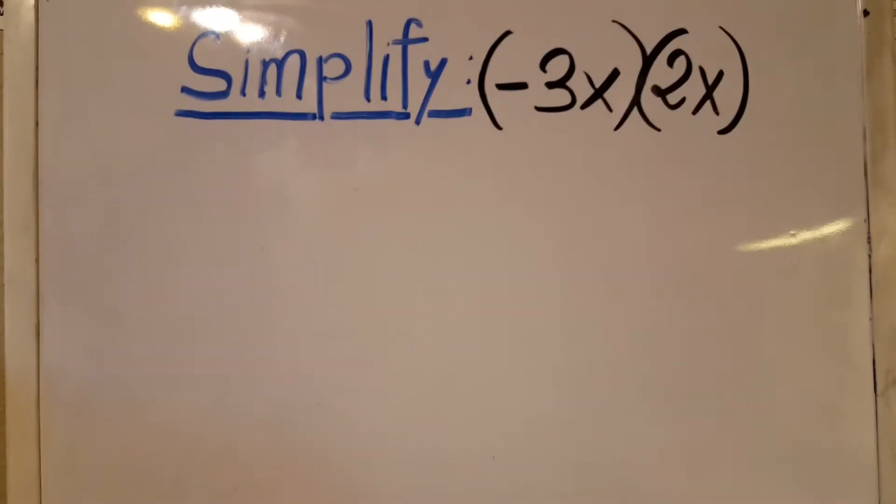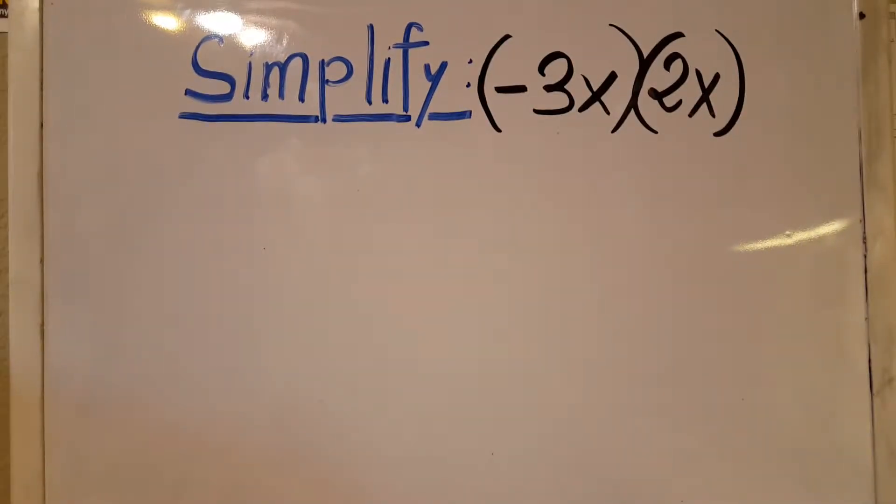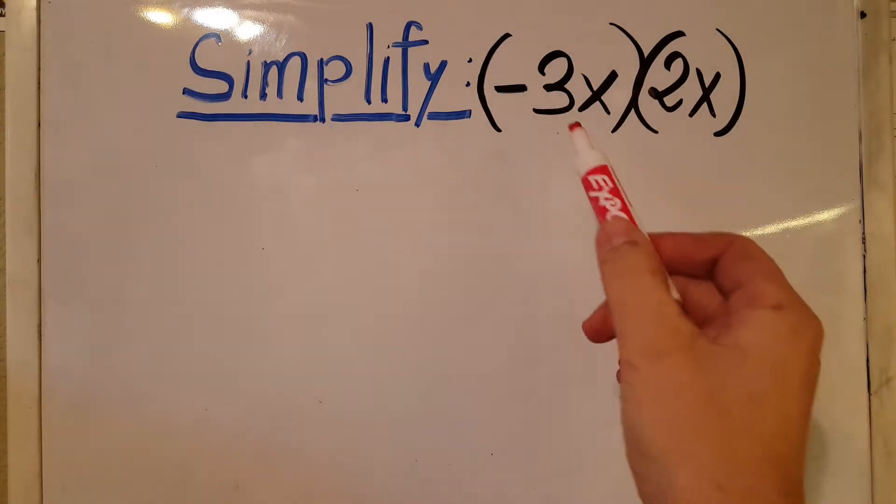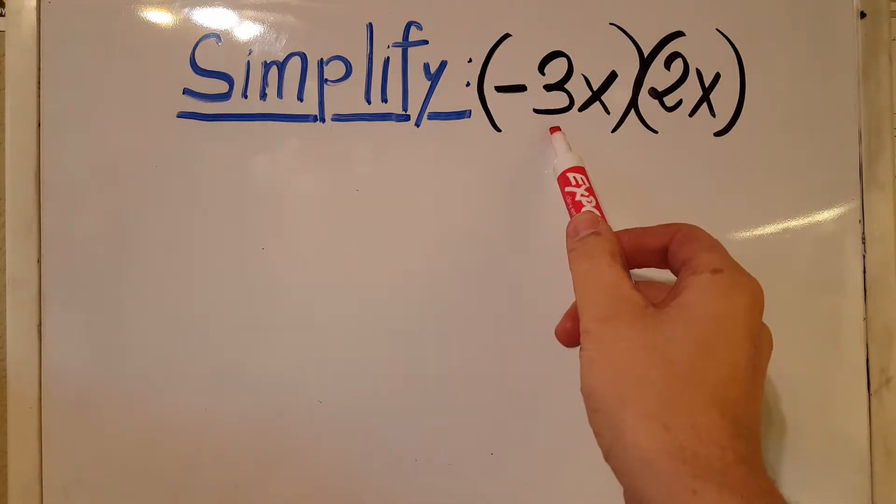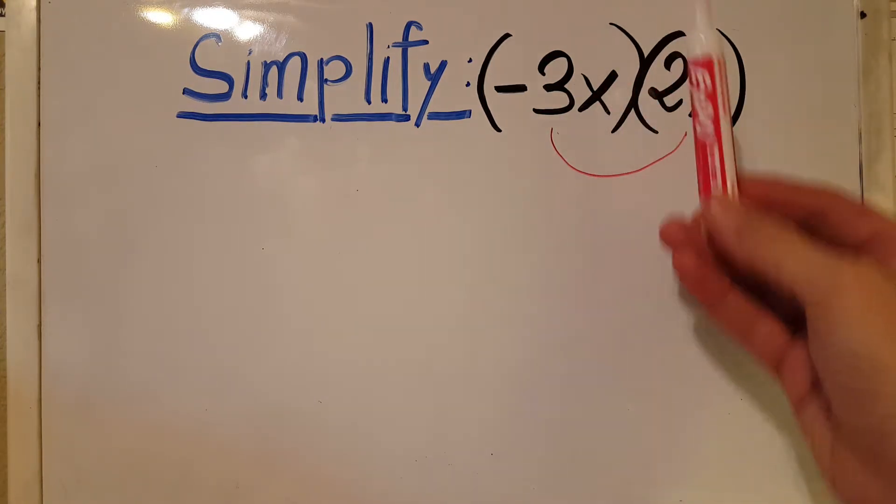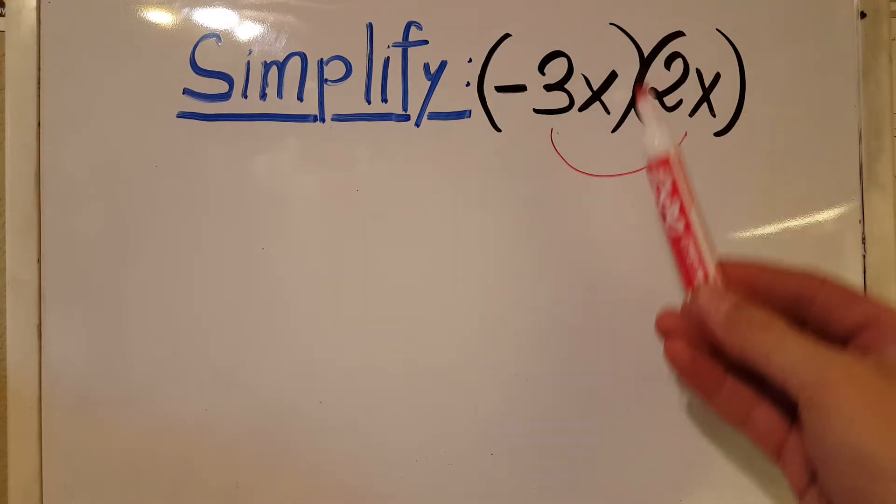Okay, here they want us to simplify the expression. We have negative 3x times 2x. We're gonna go ahead and take this and multiply it into this one. There's no pluses or minuses, just simple multiplication between the parentheses and between the terms as well.